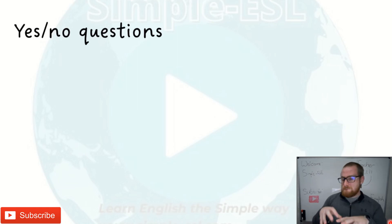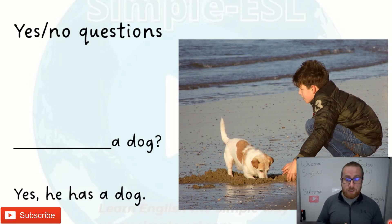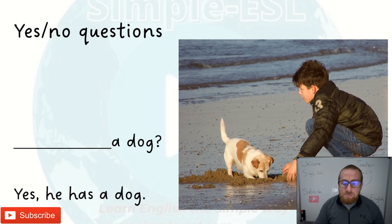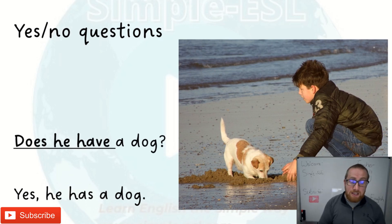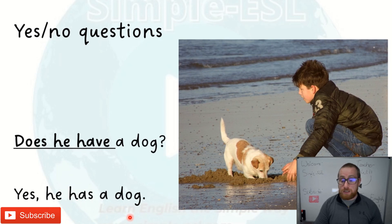Now let's move on to yes and no questions. I'm going to give you some options — you have to say yes or no. Let's try the first one as a practice. Yes, he has a dog. How would we form the question? How could we make the question using 'have' and 'has'? We could say: Does he have a dog? Does he have a dog? Yes, he has a dog. That's how we form the question.